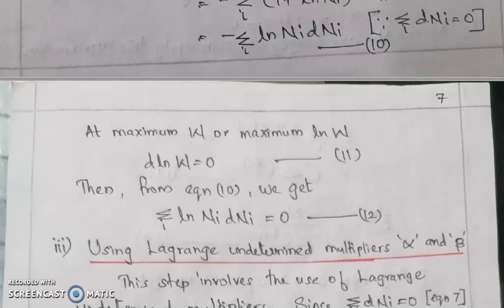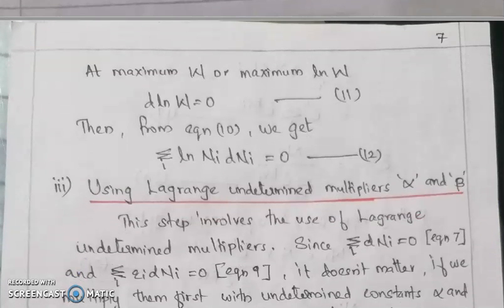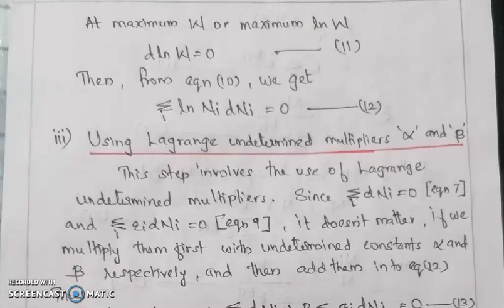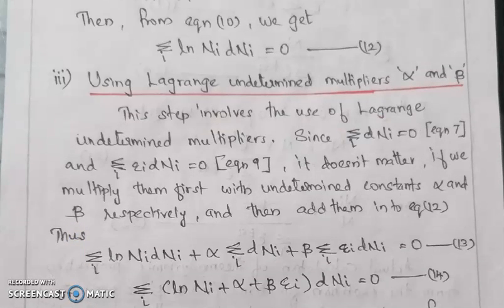Step 3: Using Lagrange undetermined multipliers alpha and beta. This step involves the use of Lagrange undetermined multipliers. Since sigma i dNi equals 0 (equation 7) and sigma i epsilon i dNi equals 0 (equation 9), we multiply them by undetermined constants alpha and beta and add them into equation 12.